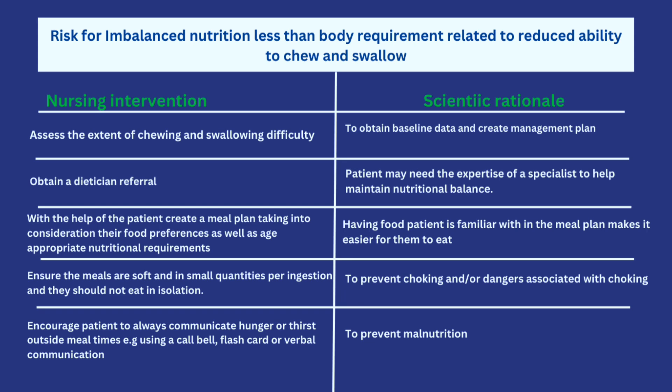Obtain a dietician referral because you need an expert in this area. Then, with the help of the patient, create a meal plan taking into consideration their food preferences as well as age-appropriate nutritional requirements — include foods the patient likes and would want to eat, but that also contains the nutrients they need based on their age and gender. Having familiar foods in a meal plan makes it easier for them to eat. Also ensure that meals are soft and given in small quantities per ingestion, with the patient not eating in isolation, to prevent choking.